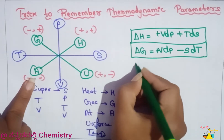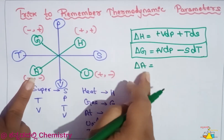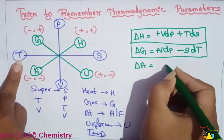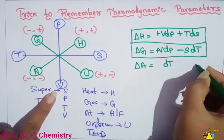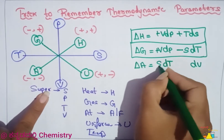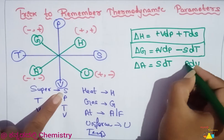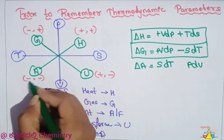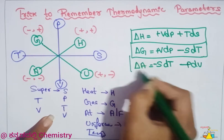Next, A is the change in Helmholtz free energy — delta A (also written delta F). This also gives VdP minus SdT. In the 2nd coordinate system, signs are negative, so we consider minus-minus.